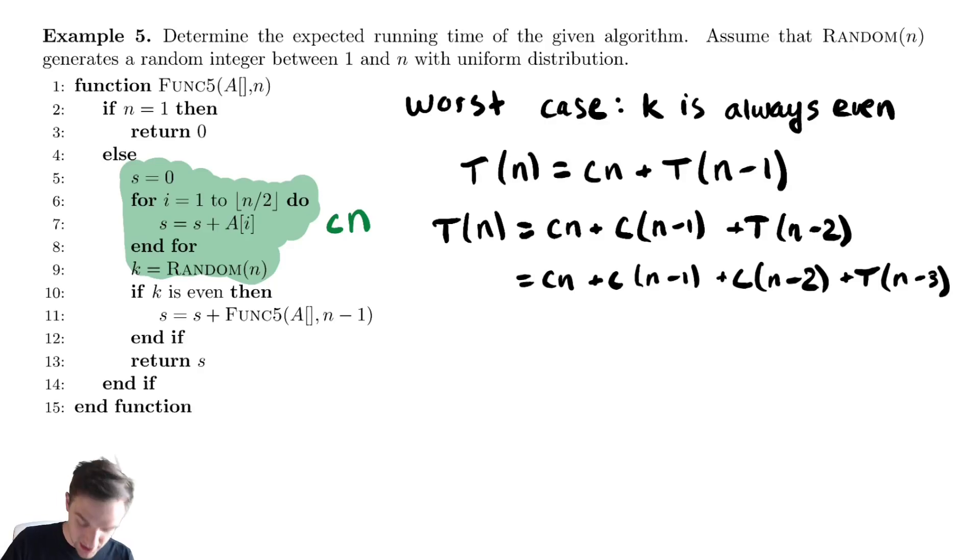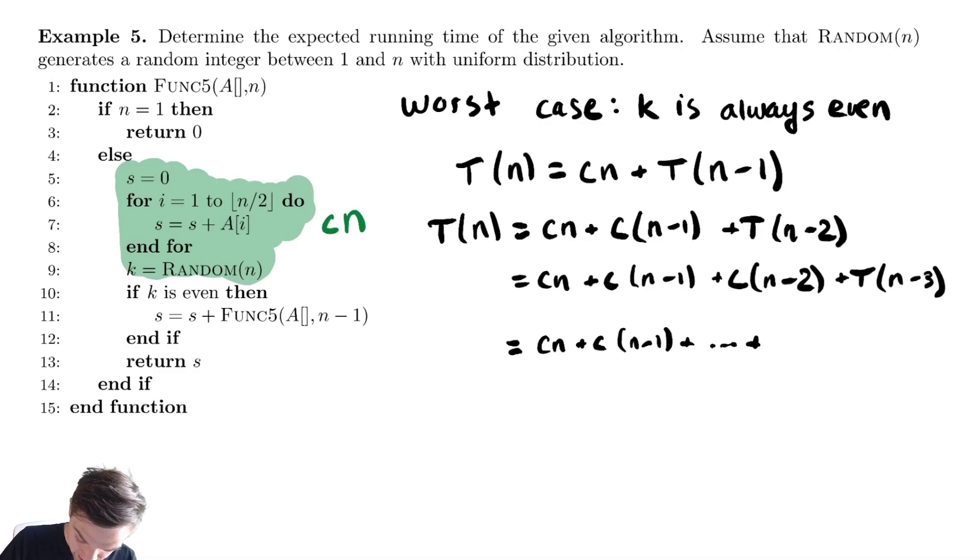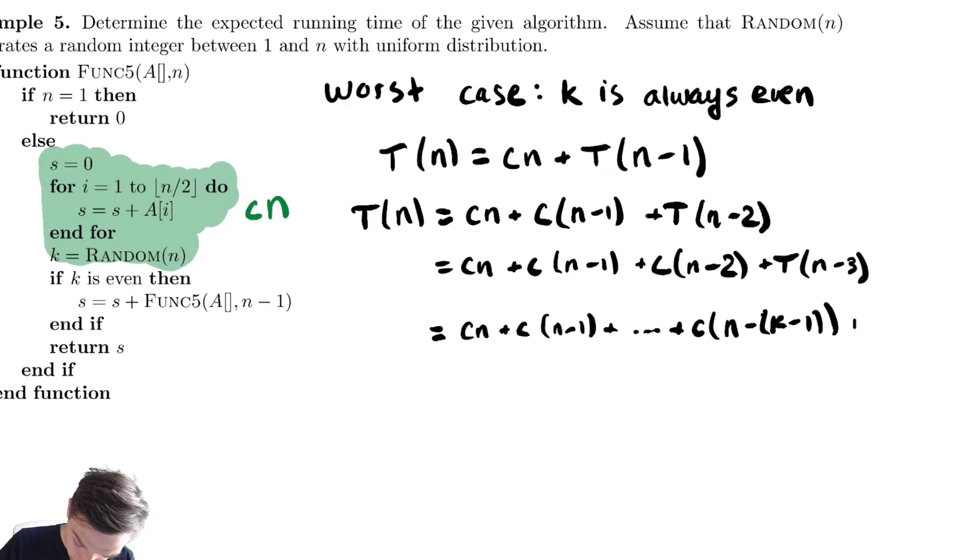The pattern that we might notice here is that this is cn plus c(n-1) plus down till plus c(n-k-1) plus T(n-k). We had to be a bit careful there with that k-1 because we are always off by 1 with that term.